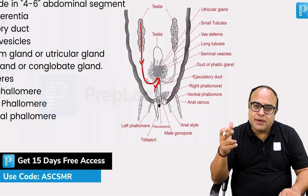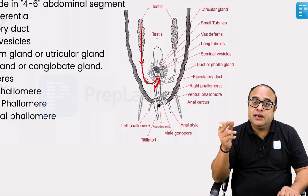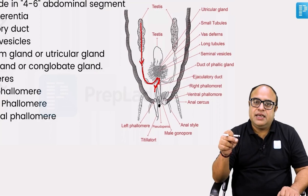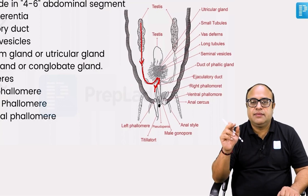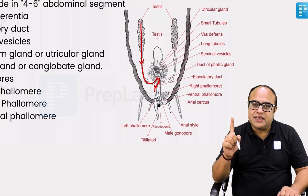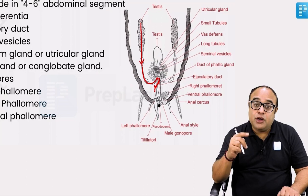From the seminal vesicle, the sperms are temporarily stored and the utricular gland pours liquid over the spermatical ball. They then go into the ejaculatory duct. At this point, a second layer is poured over the spermatical ball by the cells of the ejaculatory duct itself. So the spermatical ball is double-layered inside the body of the cockroach — the first layer secreted by utriculus majorus tubules, the second by the ejaculatory duct.